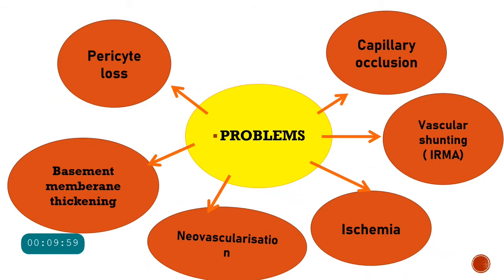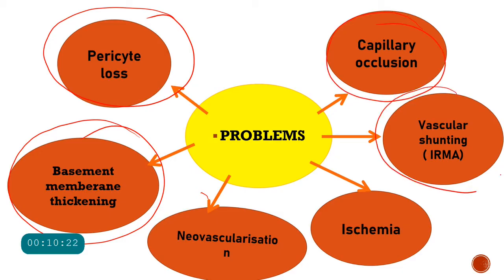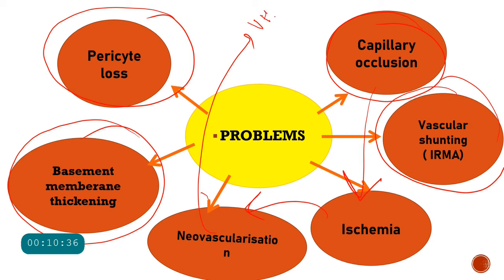All of this inflammation and damage leads to specific changes within the eye: pericyte loss, basement membrane thickening, capillary occlusion, and vascular shunting. Because of the occlusion there is ischemia, and in response to ischemia there is neovascularization. These new vessels bleed, producing vitreous hemorrhage, pre-retinal hemorrhage, or intra-retinal hemorrhages. Let us have a look at all of them one by one.